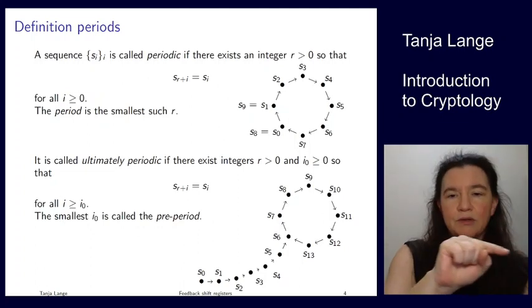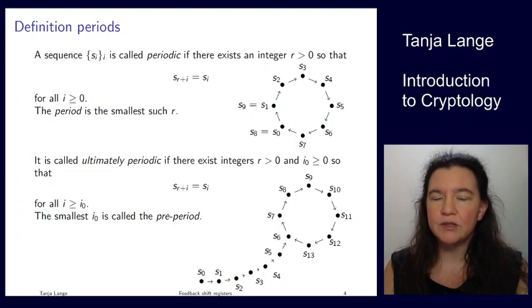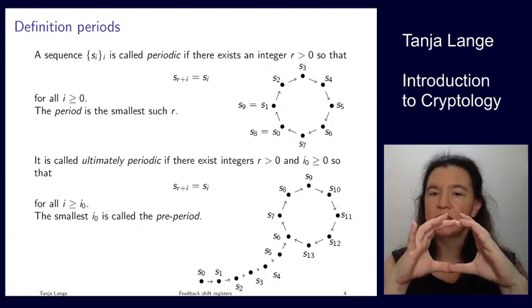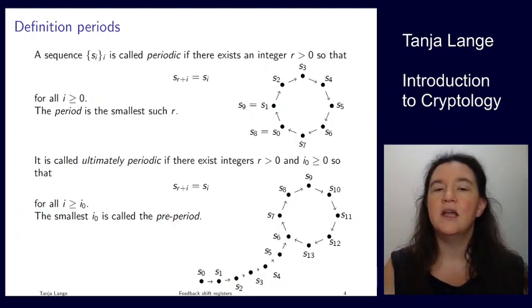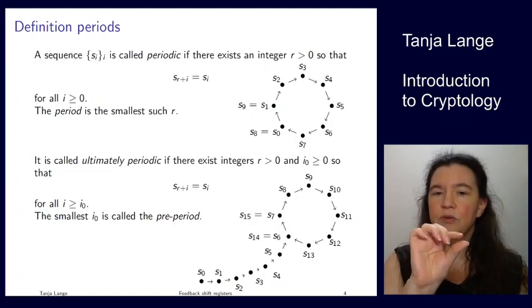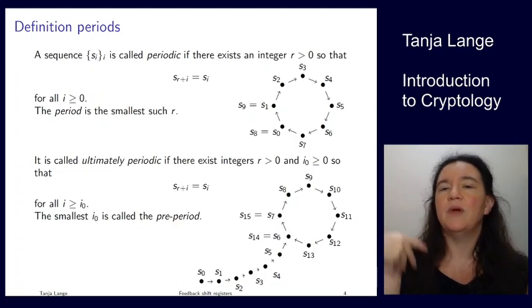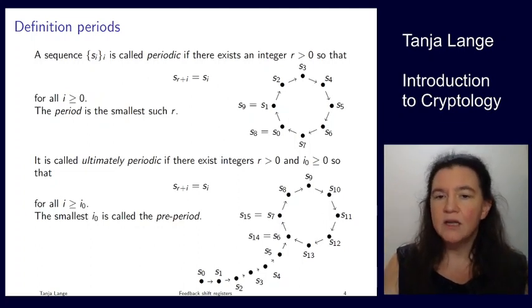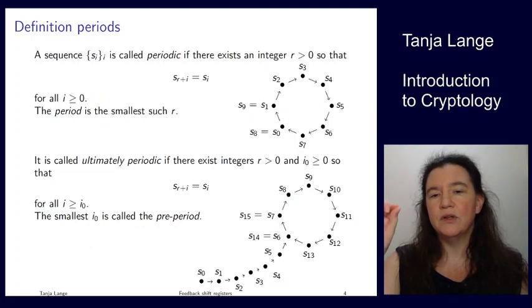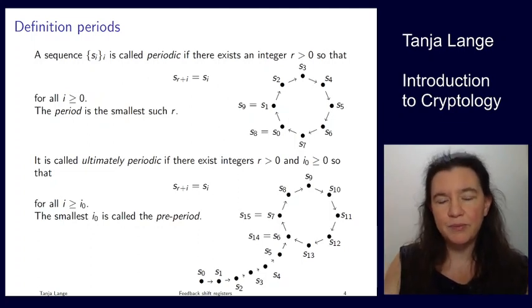You might also encounter a situation where you have some walk up to an entry point, and afterwards you walk around in circles. So this is something which we call ultimately periodic. So it's not periodic by itself. It doesn't start at 0. Here it starts at s6. But again, we'll encounter something where s6 is equal to s14, s7 is equal to s15. So again, we're having an offset by 8, but only after we walk through this tail. So the tail here is called the pre-period.